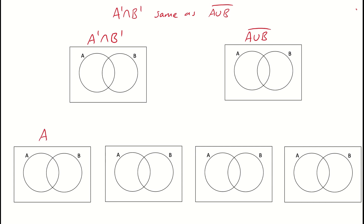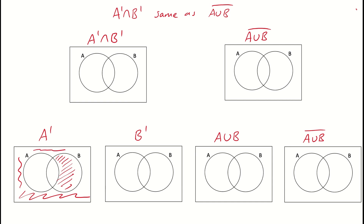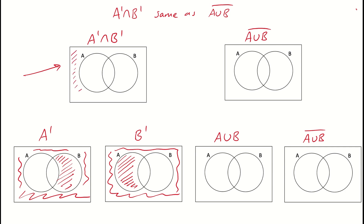First, we'll take a look at the complement of A — we want anything that's not in A, so we've got that space there in B and a bit around the outside. Now the complement of B is the reverse — we've got that little bit in A and the bit around the outside. Focusing on where these intersect, the only bit they have in common is the bit around the outside. So we've answered the first part: we know what A prime intersecting B prime looks like.